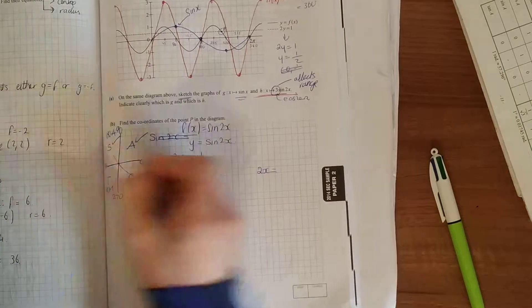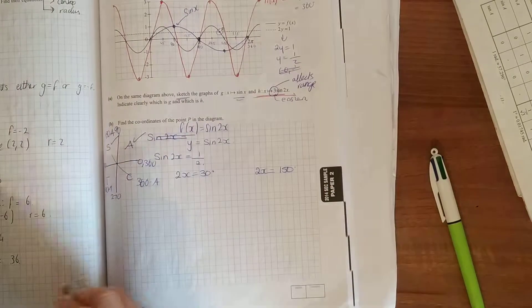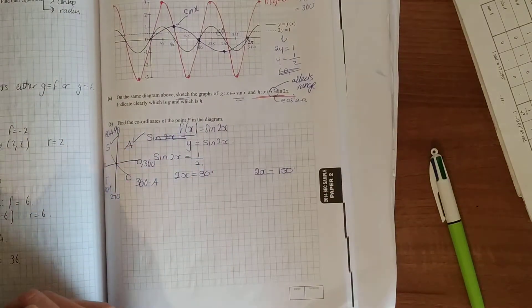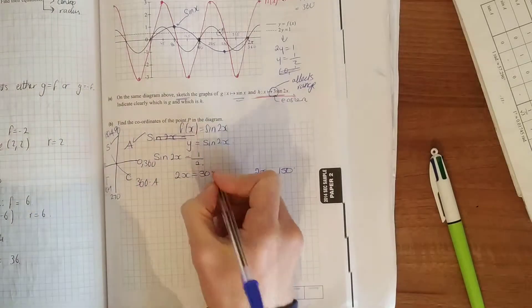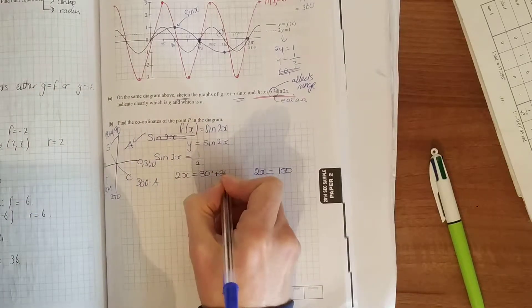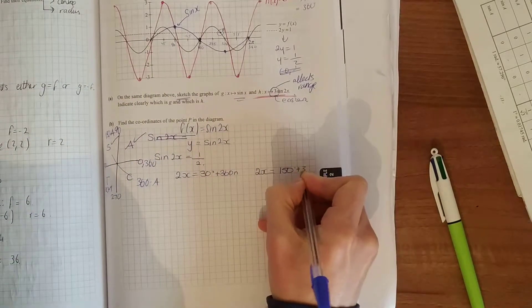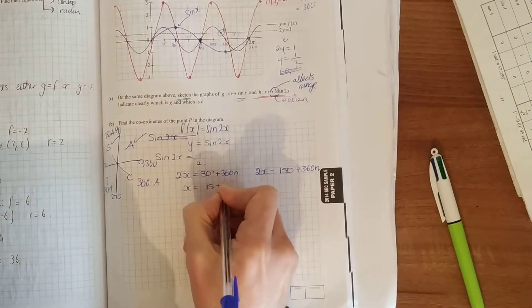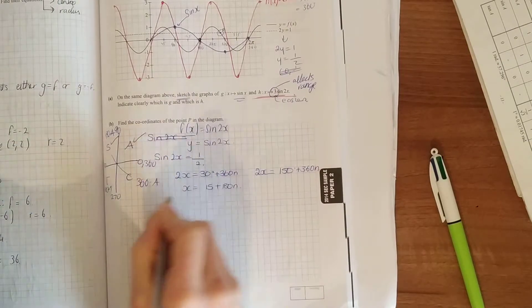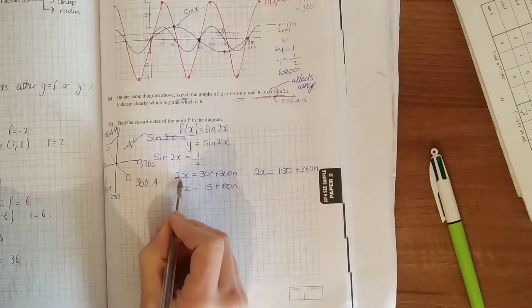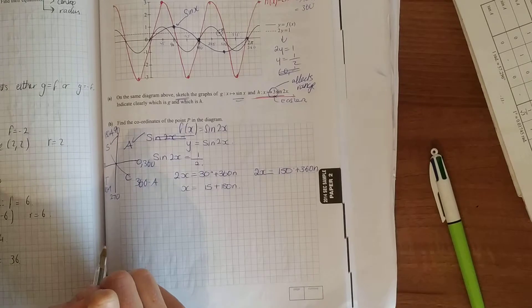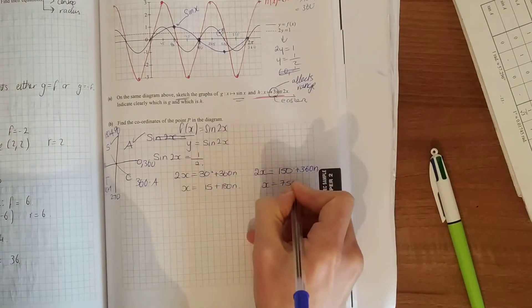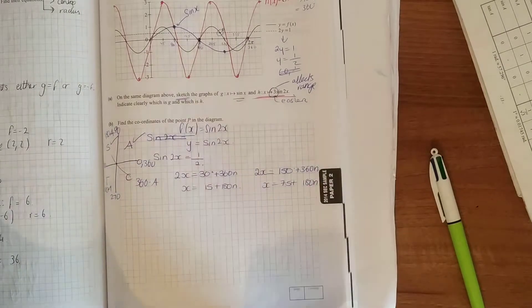That'll only give us one of the solutions. We need all solutions, so we add in a period of a sine function, which is 360n. Solve for x: divide by 2, so x equals 15 plus 180n. It takes 180 degrees for a 2x function to repeat itself. Do not divide too early. Here x equals 75 plus 180n.